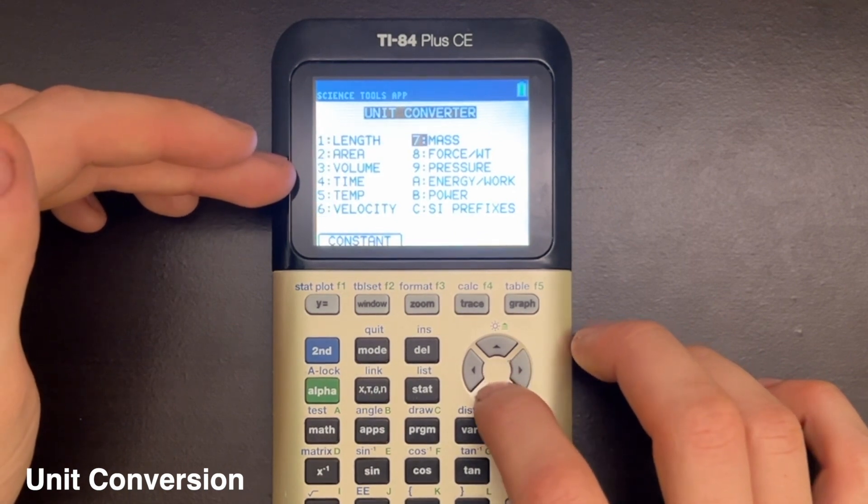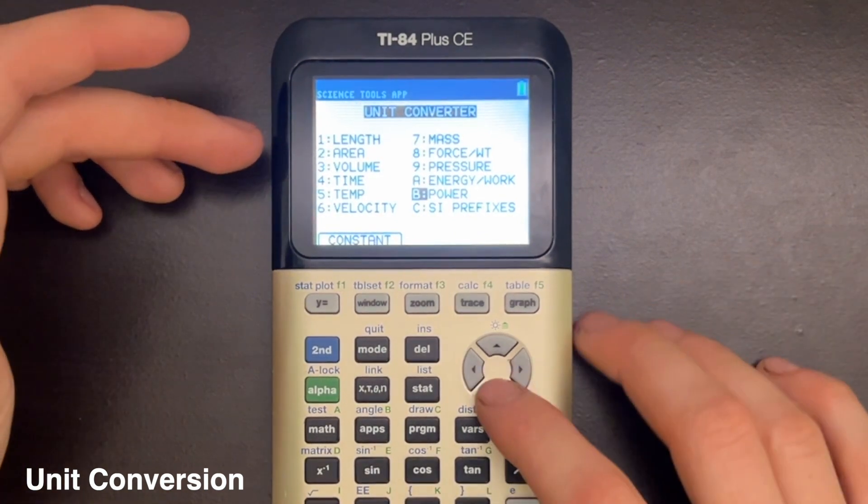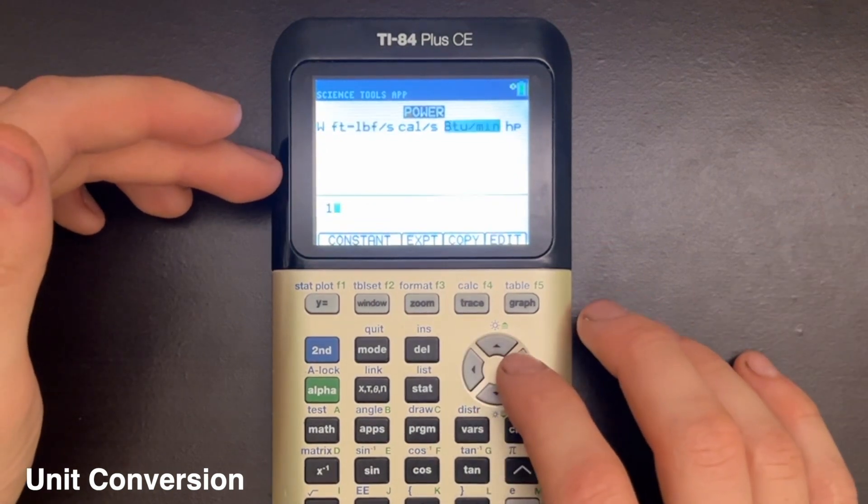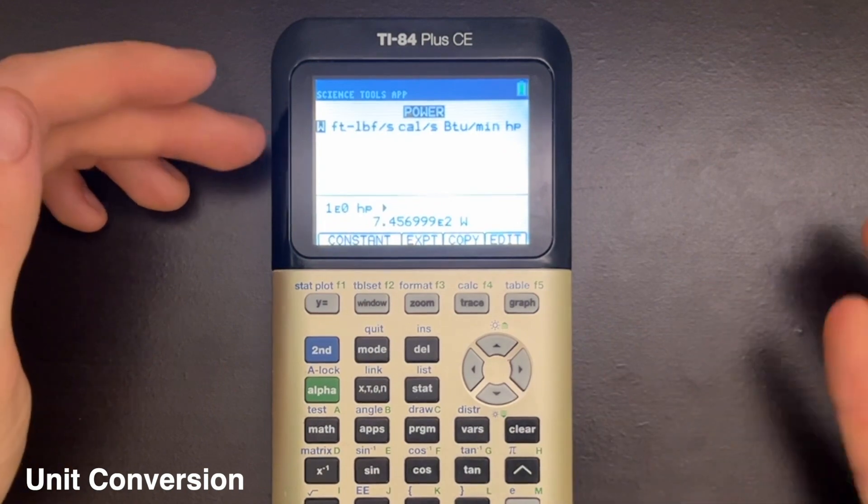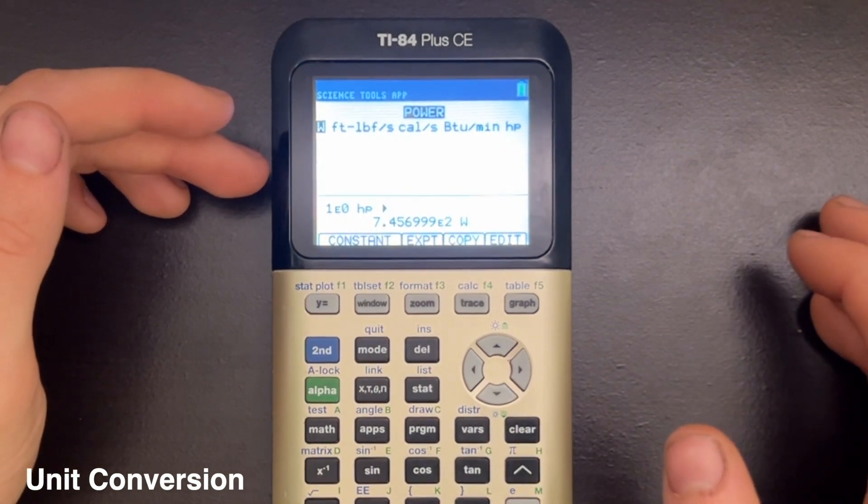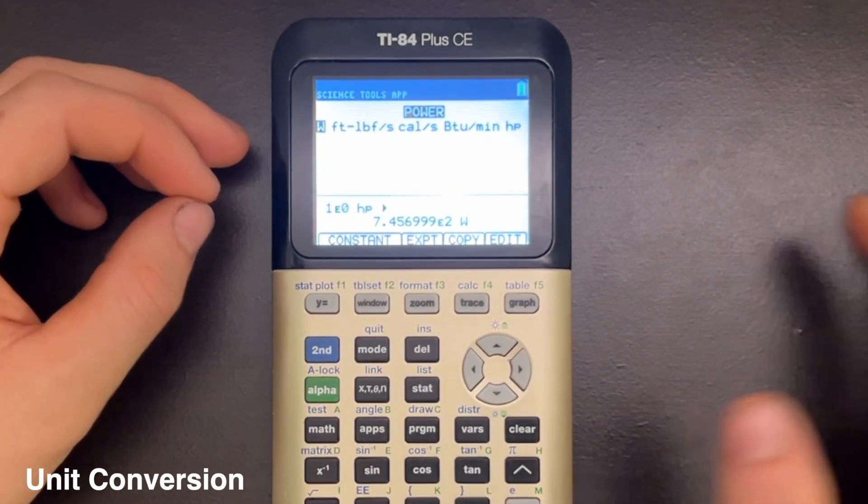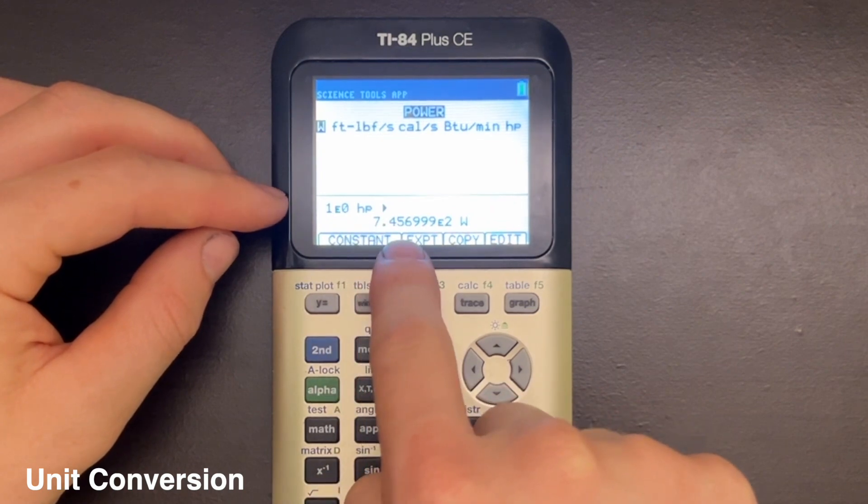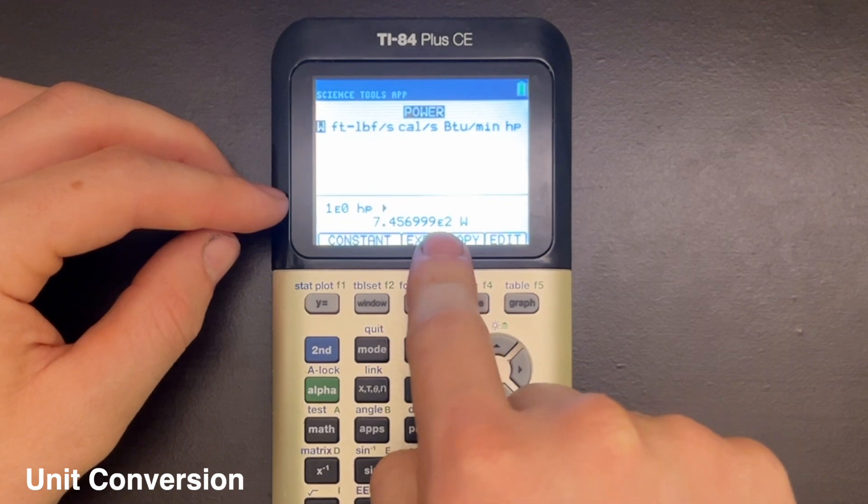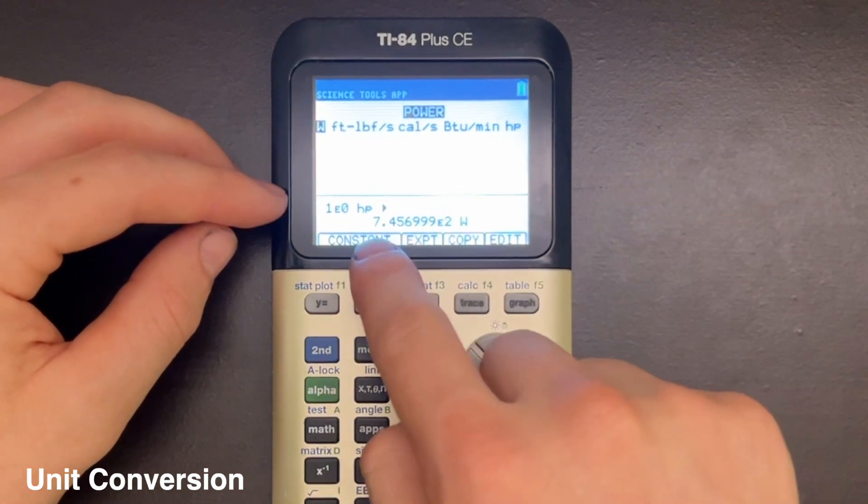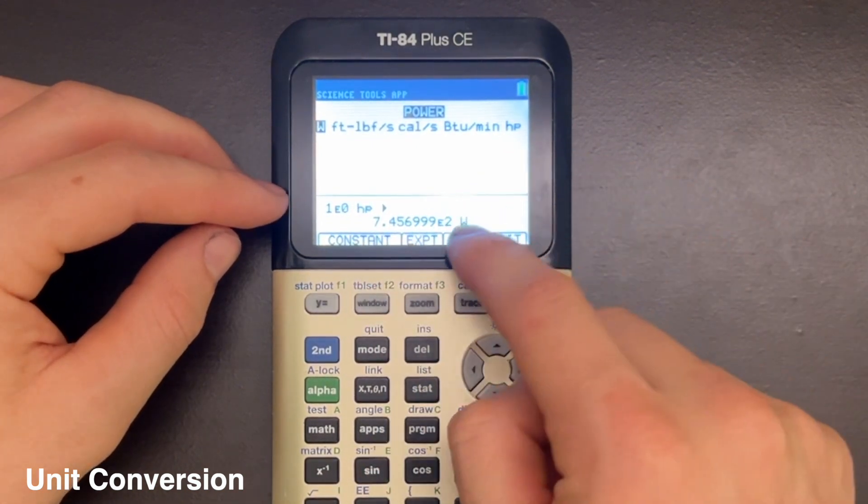I'll just do one more example. Say I wanted to convert one horsepower to watts. That's how I would do that. Very straightforward. So one horsepower is equal to 7.456999 times 10 to the 2 watts, or 745.7-ish watts.